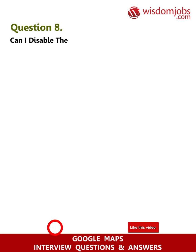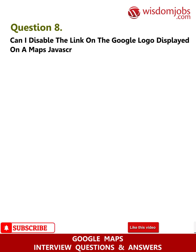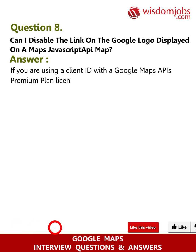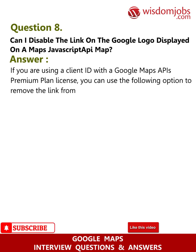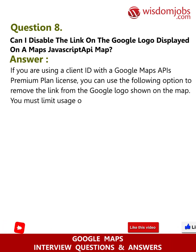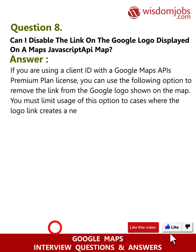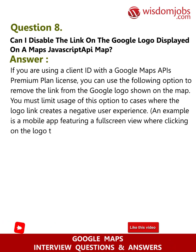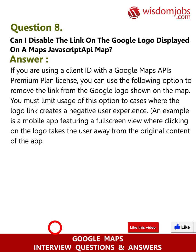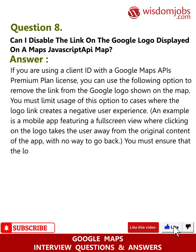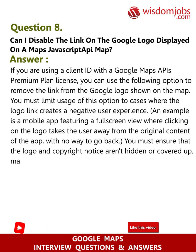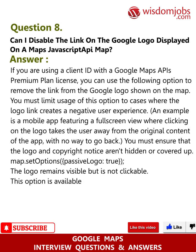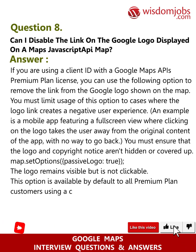Question 8: Can I disable the link on the Google logo displayed on a Maps JavaScript API map? Answer: If you are using a client ID with a Google Maps APIs Premium Plan License, you can use the following option to remove the link from the Google logo shown on the map. You must limit usage of this option to cases where the logo link creates a negative user experience — for example, a mobile app with a full-screen view where clicking the logo takes the user away from the app with no way to go back. You must ensure that the logo and copyright notice are not hidden or covered up. Use Map.SetOptions PassiveLogo: True. The logo remains visible but is not clickable. This option is available by default to all Premium Plan customers using a client ID.